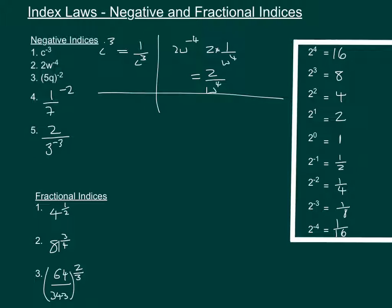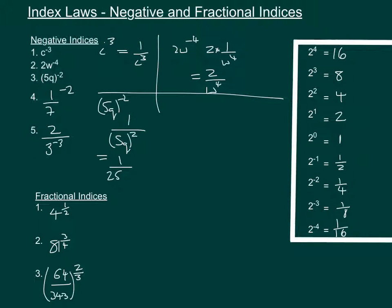Let's look at number 3. This time we've got both 5 and q to the power of minus 2, which is just going to be 1 over 5q to the power of 2, which we can expand to be 1 over 25q squared.